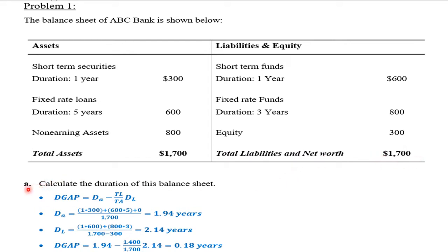Question A: Calculate the duration of this balance sheet. We know that the duration gap is equal to the duration of assets minus the total liabilities over total assets times the duration of liabilities. We don't have the duration of assets and that of liabilities, so first of all we need to determine both.